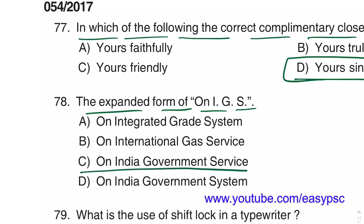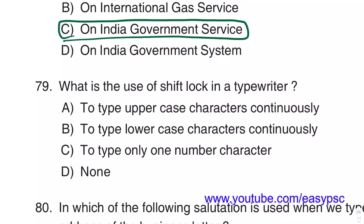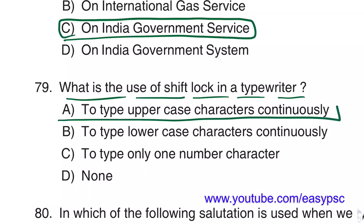The full form of OIGS is Own India Government Service. The use of Shift Lock in a typewriter is to type uppercase characters continuously.